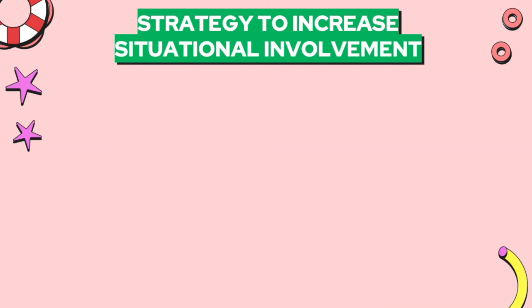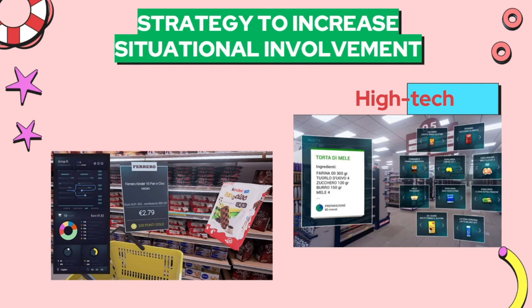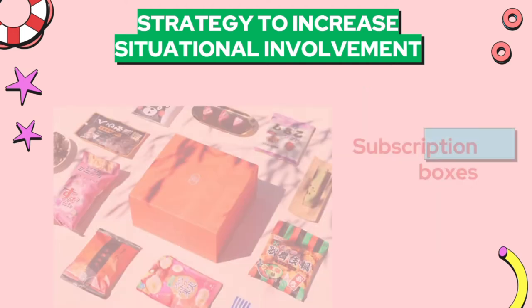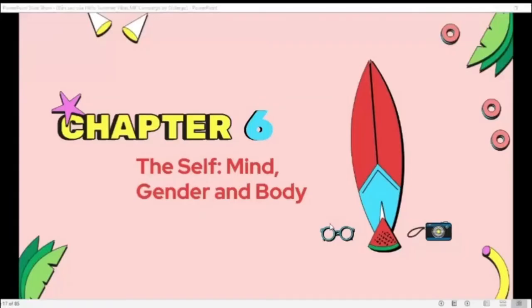Strategies to enhance situational involvement include point-of-sale advertising — for example, at a Dunkin' Donuts location, a person ordering a morning coffee sees an advertisement at the cash register pushing hash browns and breakfast sandwiches. In a supermarket, shelves near the checkout have many items — this is called personalization. Retailers also use exciting new technologies like augmented reality and virtual reality to turn shopping into an adventure. There are also subscription boxes — periodic deliveries of exotic food items, personal care products, clothing, and other items to consumers who sign up, such as Glossy Box, Mabel's Box, or Birchbox.